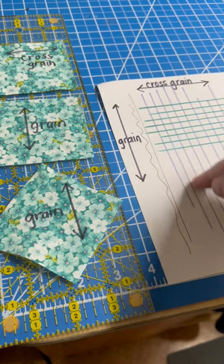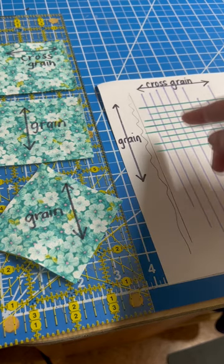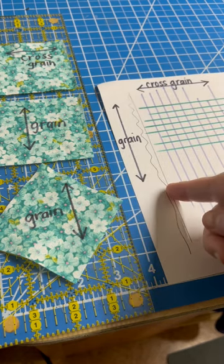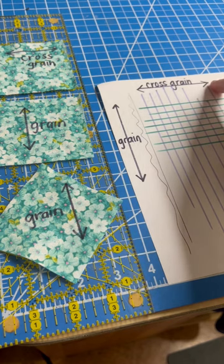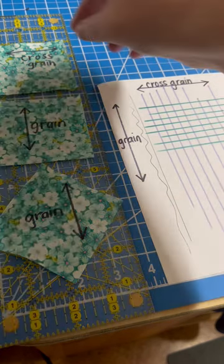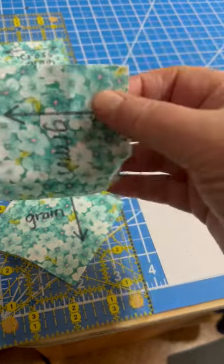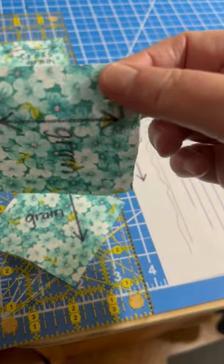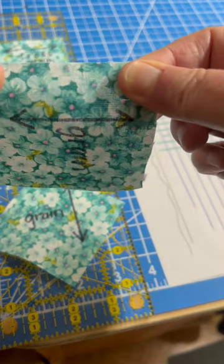and the weave that goes this way is how the fabric's made up. Parallel with the selvage is the grain, and perpendicular to the selvage is the cross grain. This is how they stretch. This is the straight grain along parallel with the selvage, and you can see it doesn't really stretch at all.